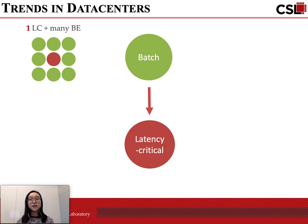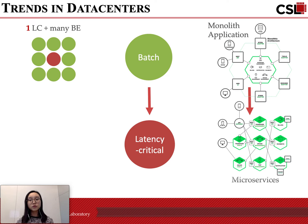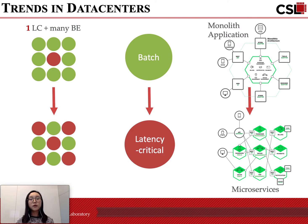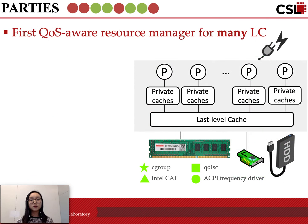Second, cloud applications are now undergoing a major redesign from large monolithic services to hundreds to thousands of microservices. Each microservice is very latency-critical and very lightweight, so they favor co-location. We therefore conclude that it is necessary to co-locate multiple latency-critical applications on the same node.